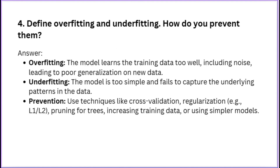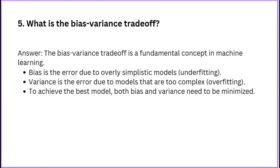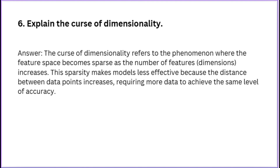Define overfitting and underfitting. How do you prevent them? What is the bias-variance trade-off? Explain the curse of dimensionality.